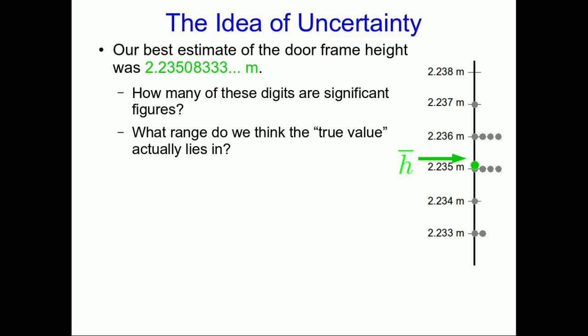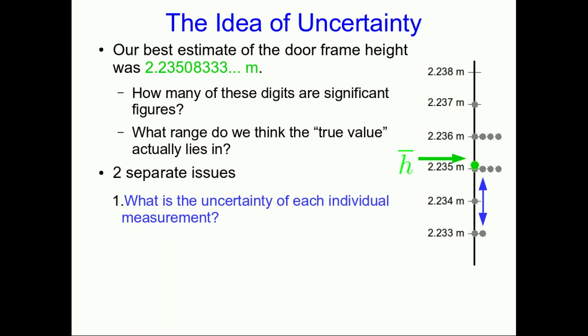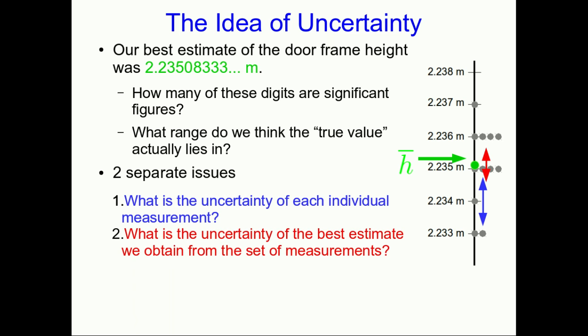That tells us that there's uncertainty. So how many of these digits are significant figures and what is that uncertainty? What range do we think the true value actually lies in? We think it's close to this mean that we've calculated. So there are actually two separate issues. First of all, what's the uncertainty of each individual measurement? And that's not quite the same as what the uncertainty is in the best estimate itself.